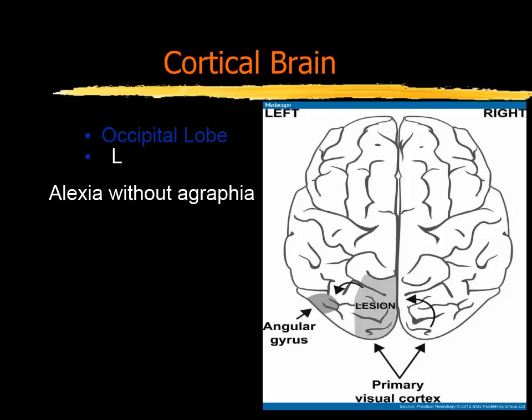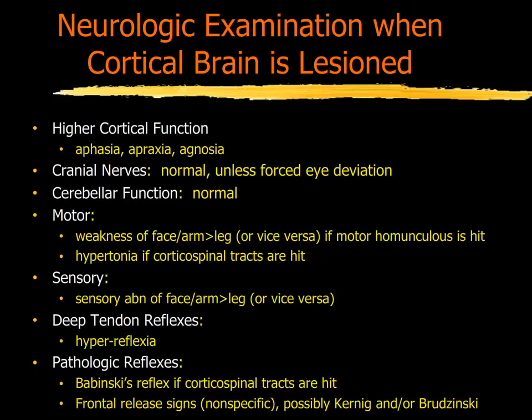People are unable to read, but the writing region is left completely unaffected and they can write. This last slide lists some of the physical findings expected with cortical lesions. Those include higher cortical functions in language, in apraxia, and especially in agnosias. Usually cranial nerves are spared, though there can be a forced deviation with frontal eye field involvement. The cerebellum is usually normal. If the motor exam is affected, it's usually with face and arm greater than leg because of the distribution of the motor homunculus. You'll expect to see an increase in deep tendon reflexes and positive Babinskis, given that these are the location of upper motor neuron deficits.